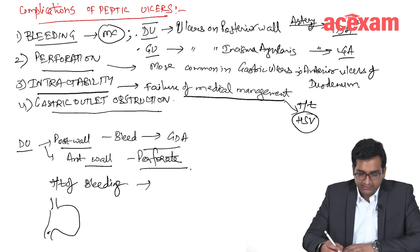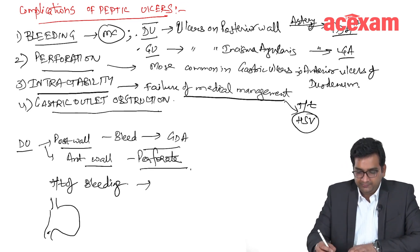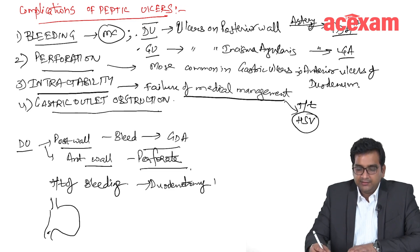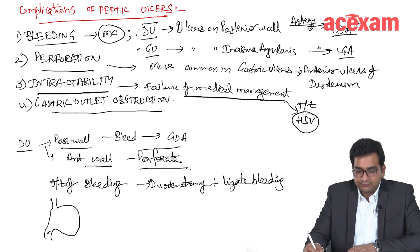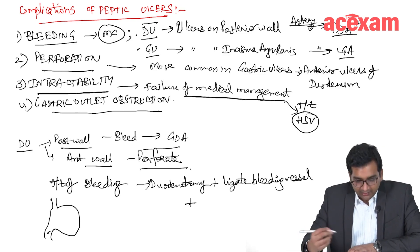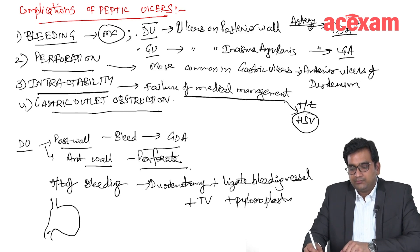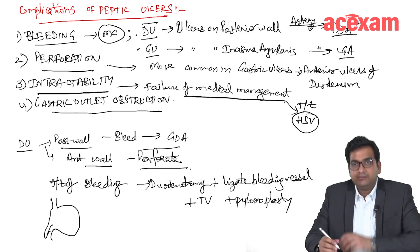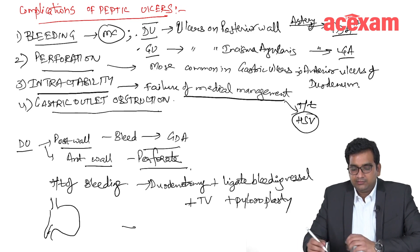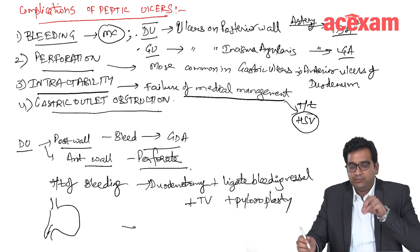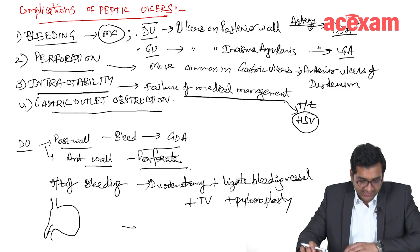In surgery, we open the duodenum — we do a duodenotomy — then ligate the bleeding vessel. After that, we perform truncal vagotomy and pyloroplasty. We close the duodenotomy transversely so that it does not become narrow. This is the treatment of bleeding.